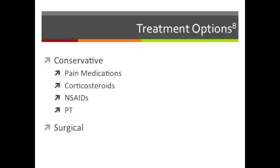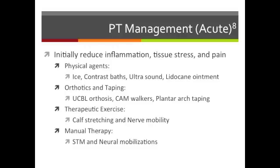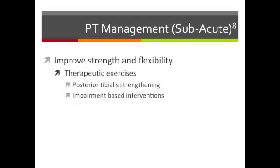Conservative physical therapy management is categorized into acute, subacute, and settled stages. In the acute stage, the therapist should initially reduce inflammation, tissue stress, and pain. This impairment-based approach may utilize physical agents, orthotics, taping, therapeutic exercise, and/or manual therapy, depending upon the patient's needs. In the subacute stage, the goal of therapy is to improve strength and flexibility.